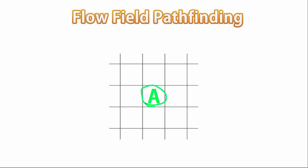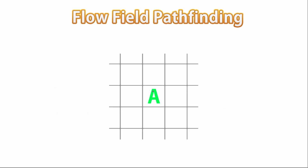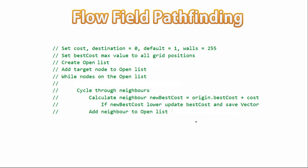For example, if we're testing this node and cycling through a neighbor, the new best cost calculated for that neighbor is going to be the best cost already inside the origin node plus the cost of moving to the neighbor node. Remember how the best cost defaults to max value — so as we calculate the new best cost, if it's the first time we're going through that node it's always going to be lower, so we always update it. And if the new best cost is lower, we update that data and also save that vector — so we store a vector that points in the direction of the best path. Then we add the neighbor to the open list to be queued up for searching. We keep running this logic while we have nodes on the open list. As soon as the open list is empty, that means we've checked all nodes in the map, the algorithm has concluded, and each grid node will have the correct vector that eventually points to the target destination.